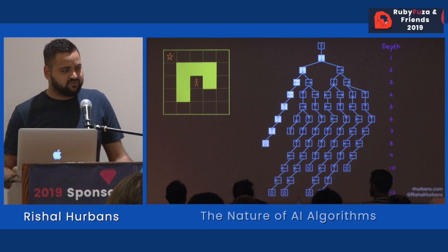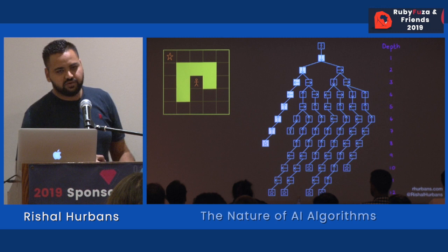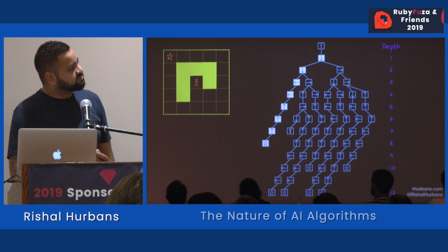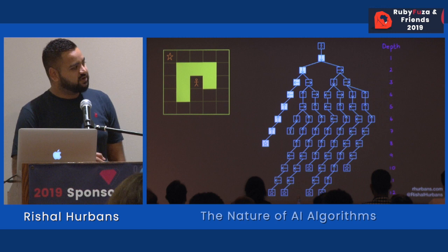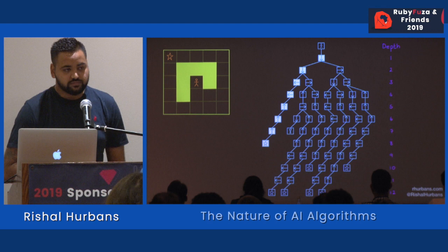Depth-first search explores a path all the way until a leaf node — something at the edge — before it traverses back. If you look at this specific problem, depth-first search would be perfect because the first outcome it finds is actually the best and shortest outcome. However, we'd have to traverse every single possibility in this tree to find that outcome.